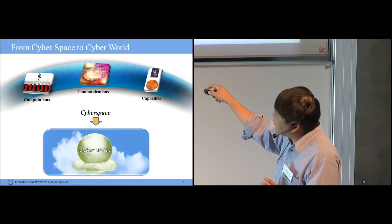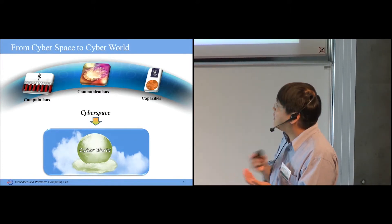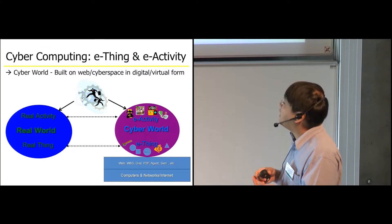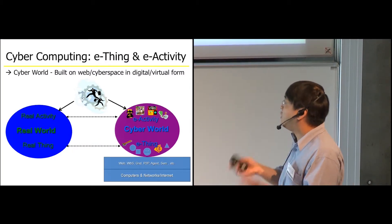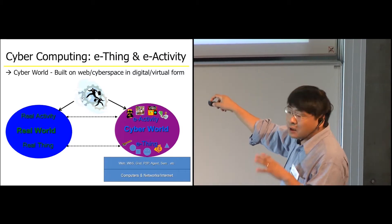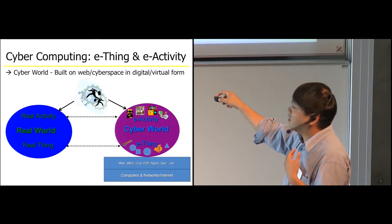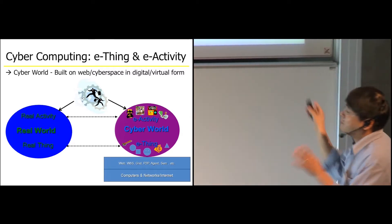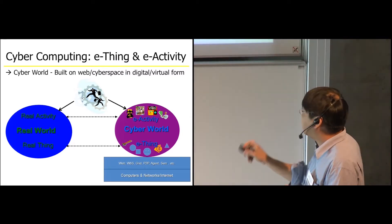So we can do a lot of what we call e-activity. For example, you take online courses, you make friends, and you do online auctions. Then, accordingly, you're going to have e-money. And so a lot of e-things also generate. So you can jump either world differently.